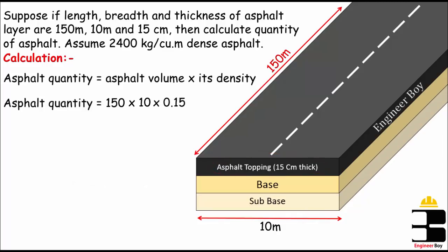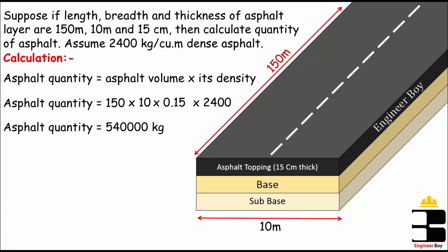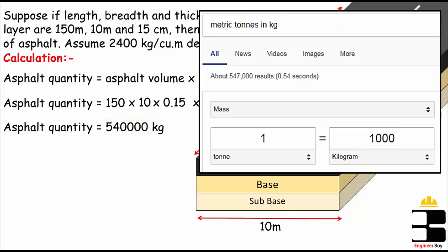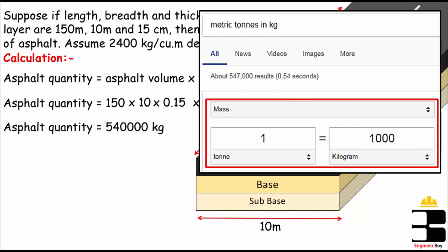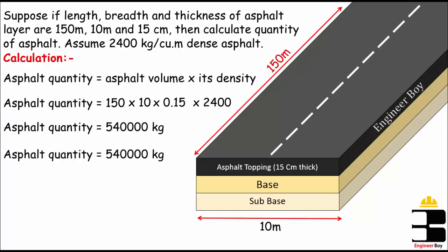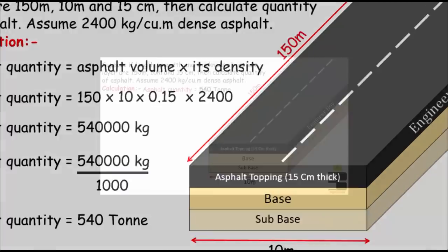This gives us the asphalt volume. The density of asphalt is 2400 kg per cubic meter. Multiplying these together, the quantity of asphalt equals 540,000 kg. Since 1 ton equals 1000 kg, dividing by 1000 gives us the quantity in tons, which is 540 tons.